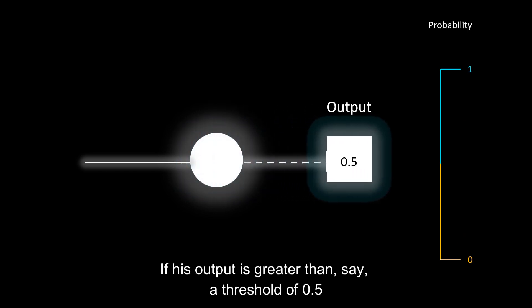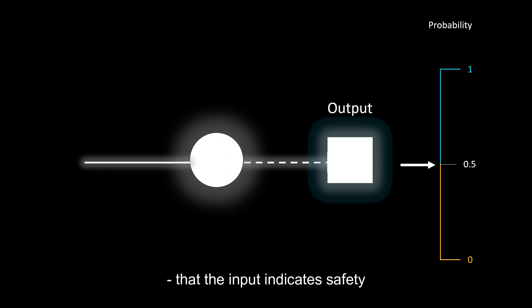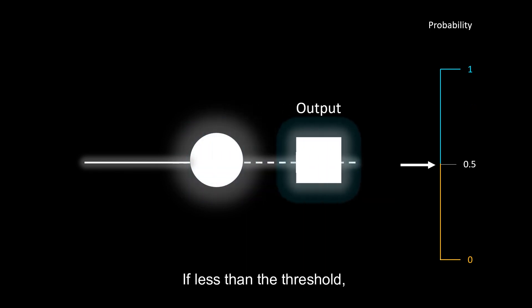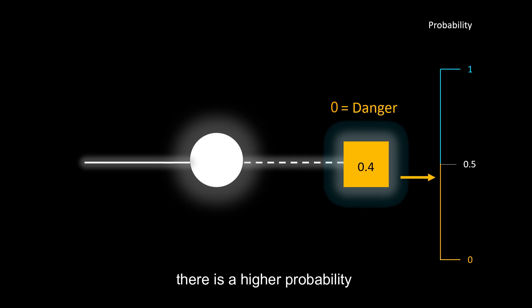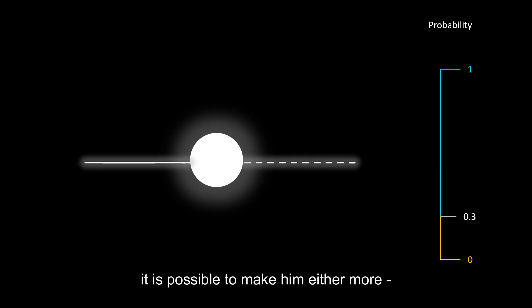If his output is greater than, say, a threshold of 0.5, Neo can be more certain that the input indicates safety. If less than the threshold, there is a higher probability that he might be in danger. Now, depending on Neo's environment, it is possible to make him either more optimistic or risk-averse. For instance, if we increase the threshold, we make Neo more alert to danger.